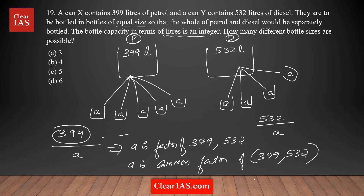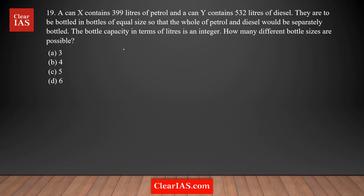What we need to find is the highest common factor of 399 and 532. That gives the largest possible bottle capacity, but it's not the final answer. We then find all the factors of that HCF — those will be the answer. Either way, let's start with the two numbers: 399 and 532.